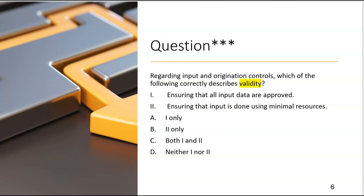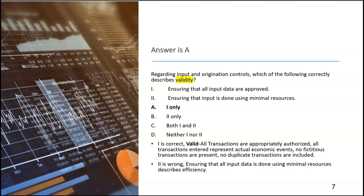Regarding input and origination controls, which of the following correctly describes validity? Option one: ensuring that all input data are approved — yes. Option two: ensuring that input is done using minimal resources — that would be efficiency. So option one is correct. Validity means all transactions are appropriately authorized, represent actual economic events, with no fictitious or duplicate transactions. It's like the existence assertion in auditing, where everything recorded represents a valid, real transaction.